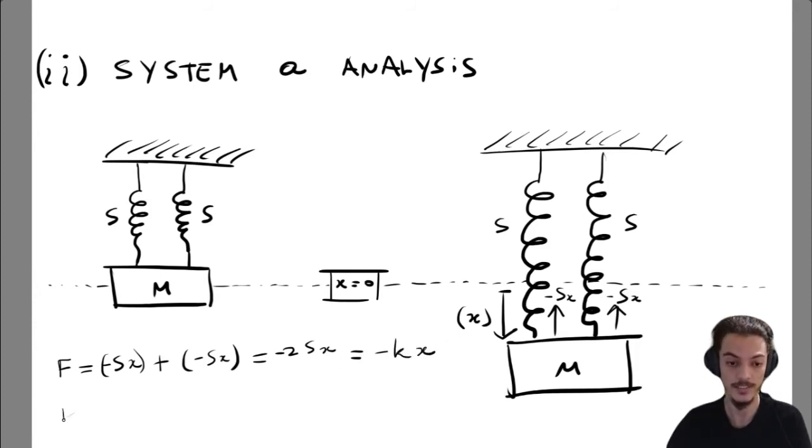So the total force will be minus 2s times x. And this is a total force of this kind, in this case where k is equal to 2s. Okay, and by Newton's second law, this total force is equal to the mass of the system m times the acceleration of the system.